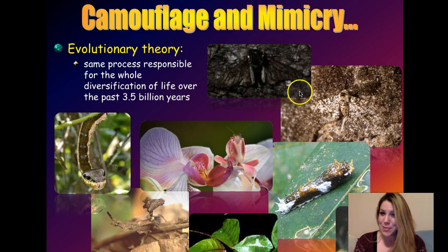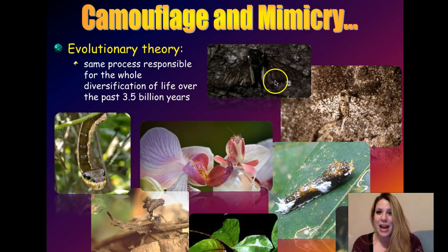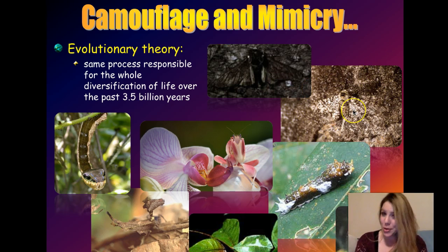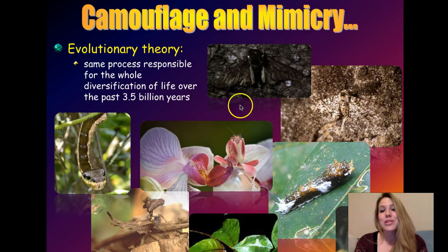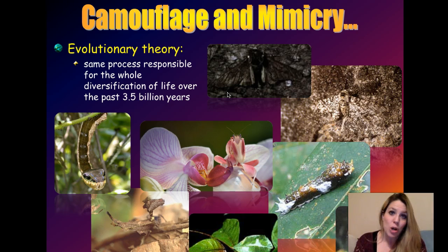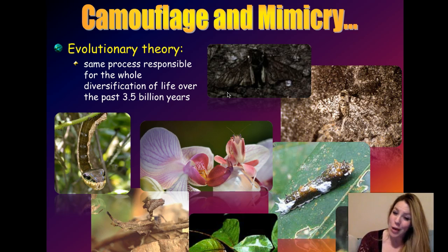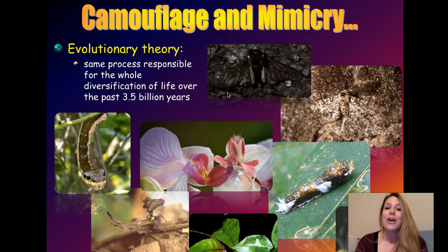We've already talked about the peppered moths and how within the same species you have ones that are lighter colored and camouflage against lichen on light-colored trees, and dark ones which blend in with dark backgrounds like those affected by soot from human industry. So we've already talked about how you can get those morphotypes — those body types — evolving.